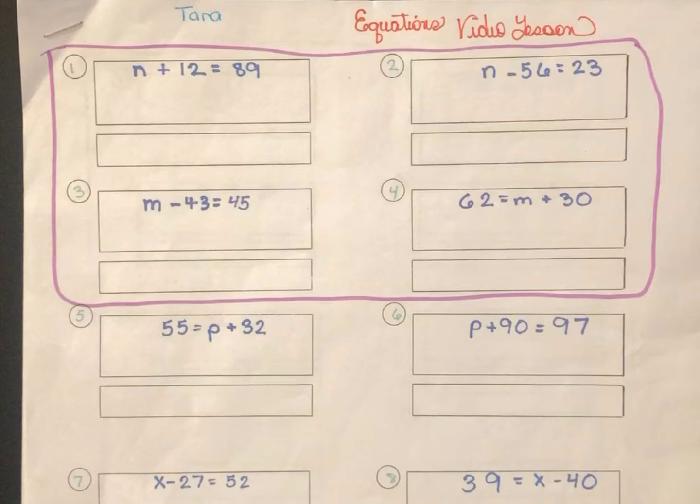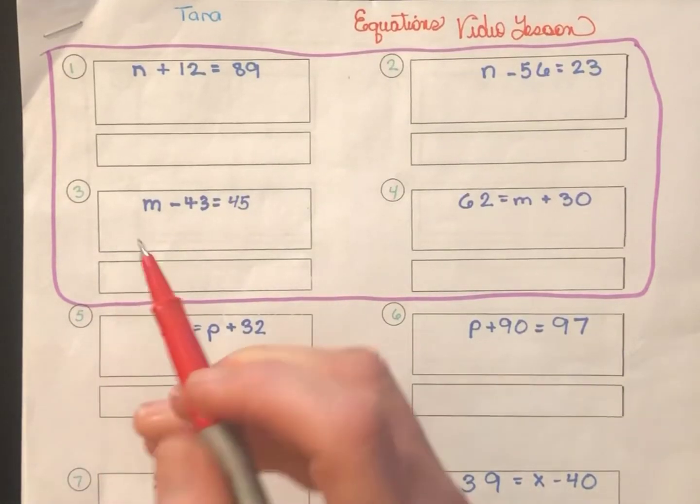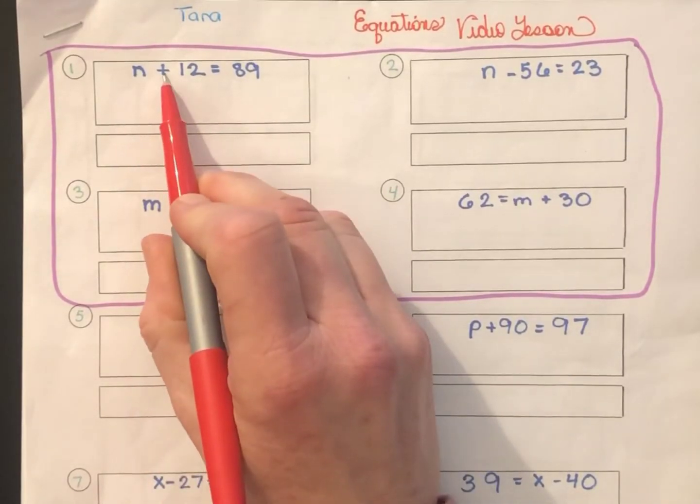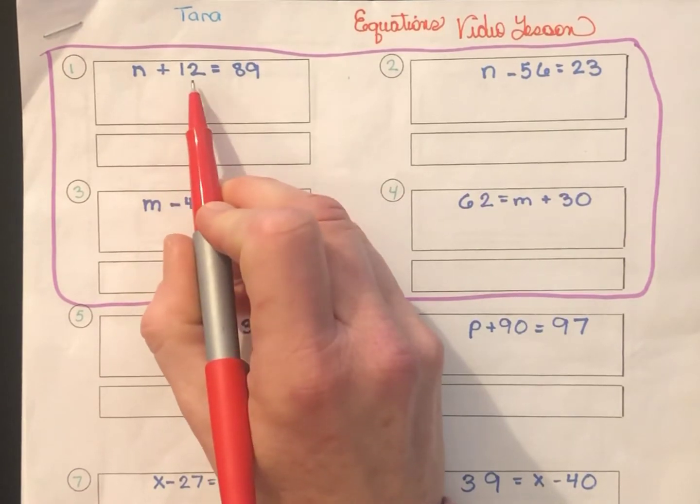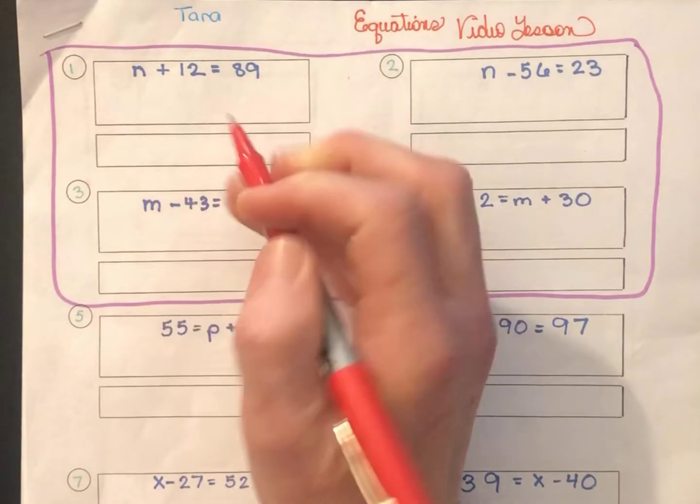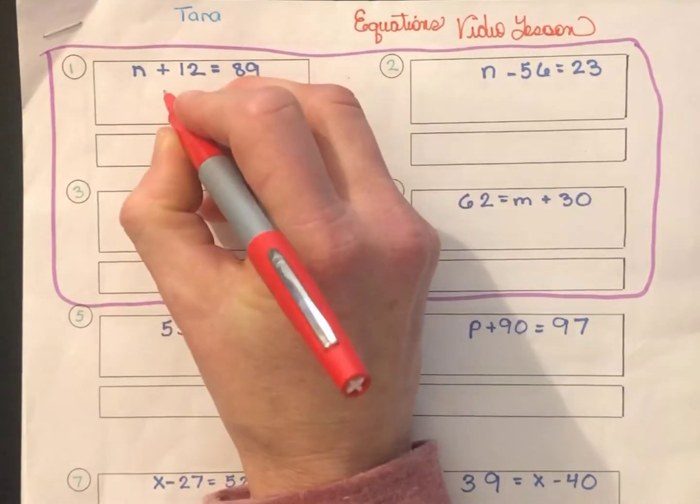There are five pages in this lesson all together, and we will do quite a few of them together. It's most important to me that you solve them the correct way. So let's go ahead and start with number one. Notice n has 12 with it. n plus 12 equals 89. The goal again is to get n all by itself.